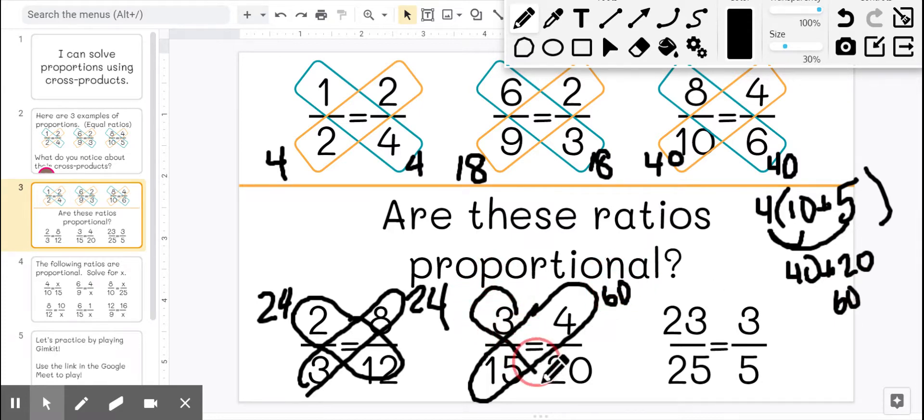60. And then 3 times 20 is 20, 40, 60. Also 60. So yes, this is a proportion.